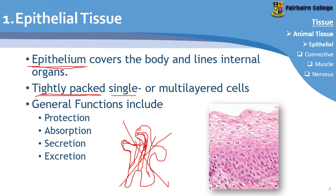Epithelial cells are tightly packed and can be single or multi-layered. Their general functions include protection, absorption of substances, secretion, and excretion. Secretion is when your body gives off useful things — for example, salivary glands secrete saliva. Excretion is when your body gets rid of waste, like carbon dioxide or urea. So secretion produces useful substances, while excretion removes waste.